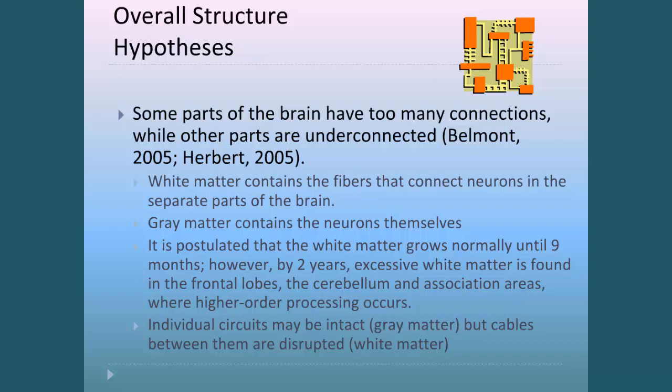When children with autism are reading or doing something that has that interrelatedness needed — that functional connectivity where the white matter has to connect to many areas of gray matter in the brain — what they're seeing is that it's not as efficient.